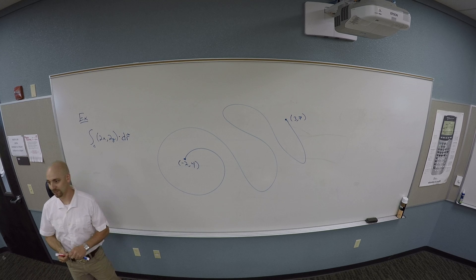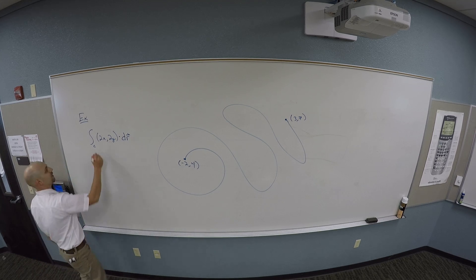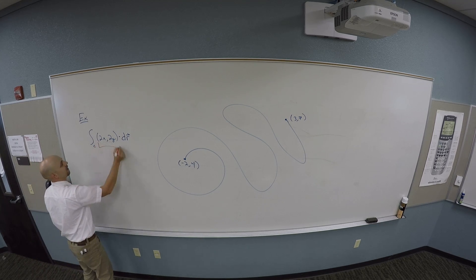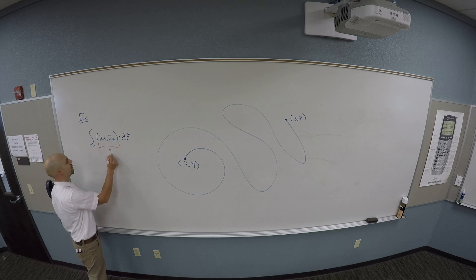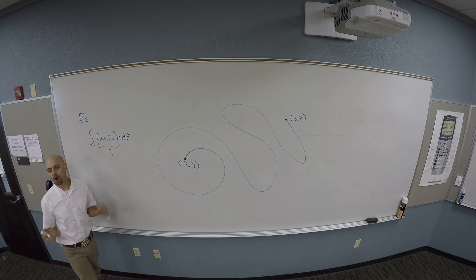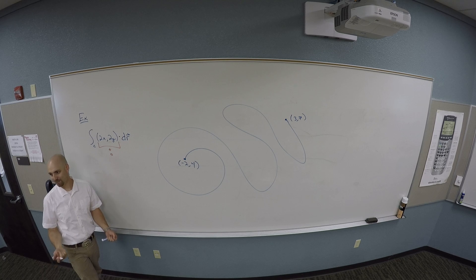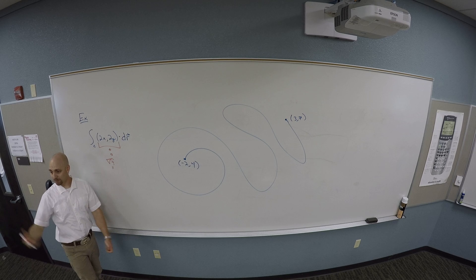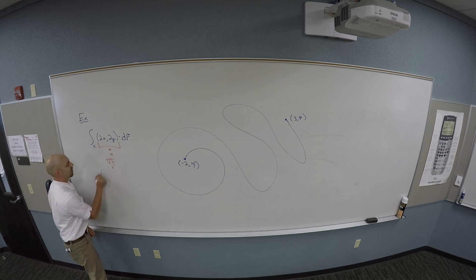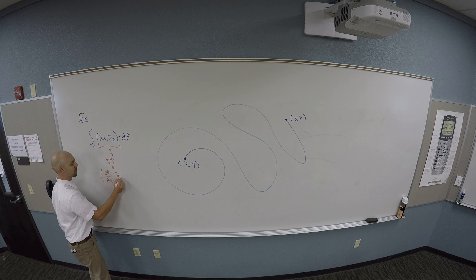Is this the gradient of something? I'm looking at this vector field and thinking: hopefully, please let this be the gradient of something. And of course the gradient of something is the partial of F with respect to X, comma the partial of F with respect to Y.